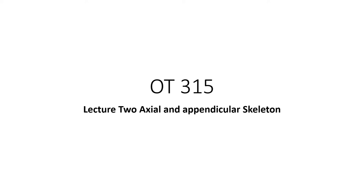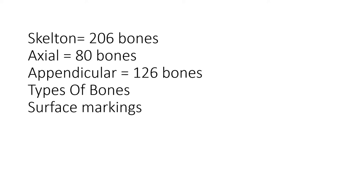It's Dr. DeMaio. This is OT 315, Lecture 2. You could say this would be Part 1 because this is just the axial skeleton and the skull. We still have to do the vertebrae. The skeleton total has 206 bones. The axial skeleton has 80 bones. The appendicular skeleton has 126 bones.